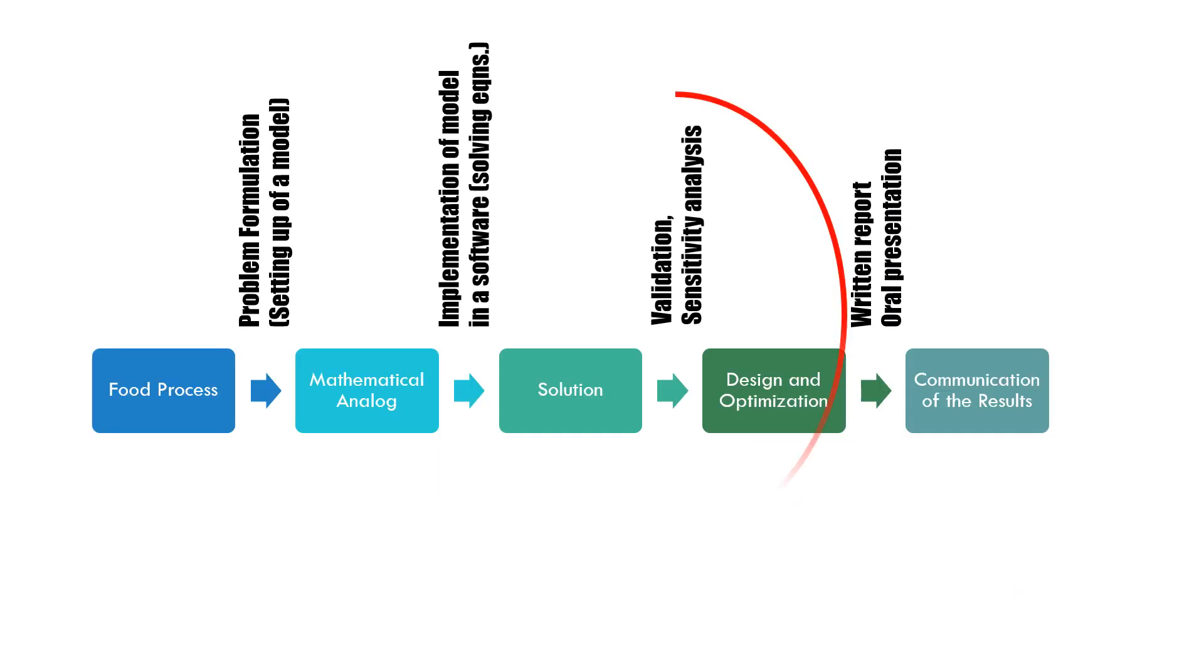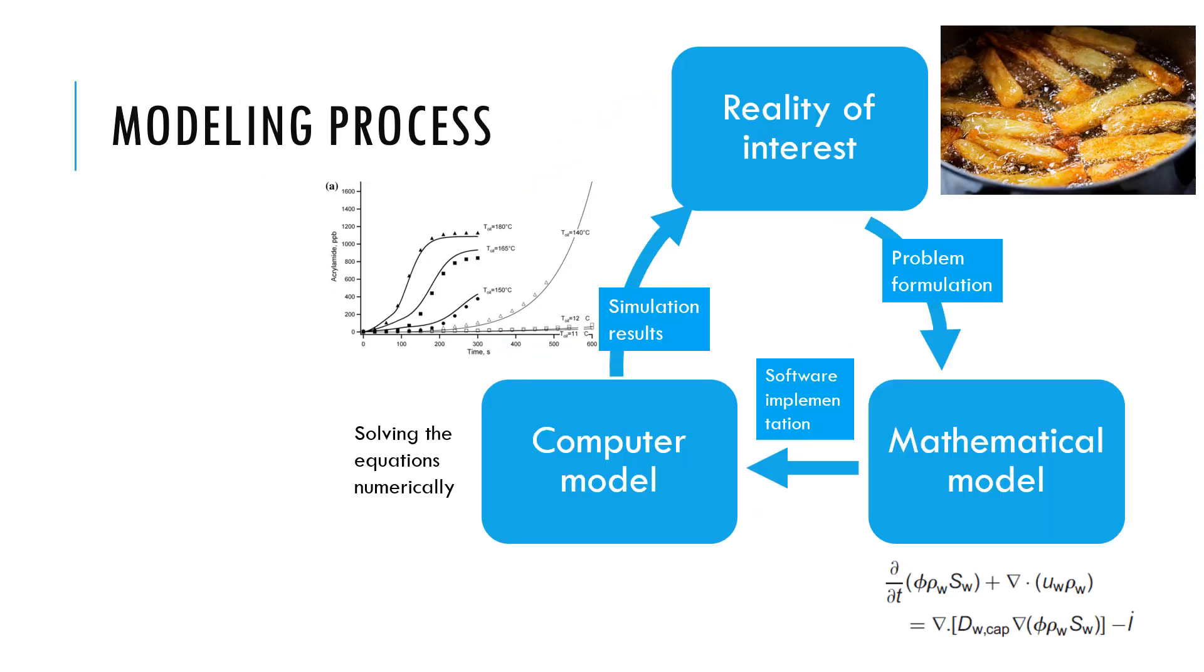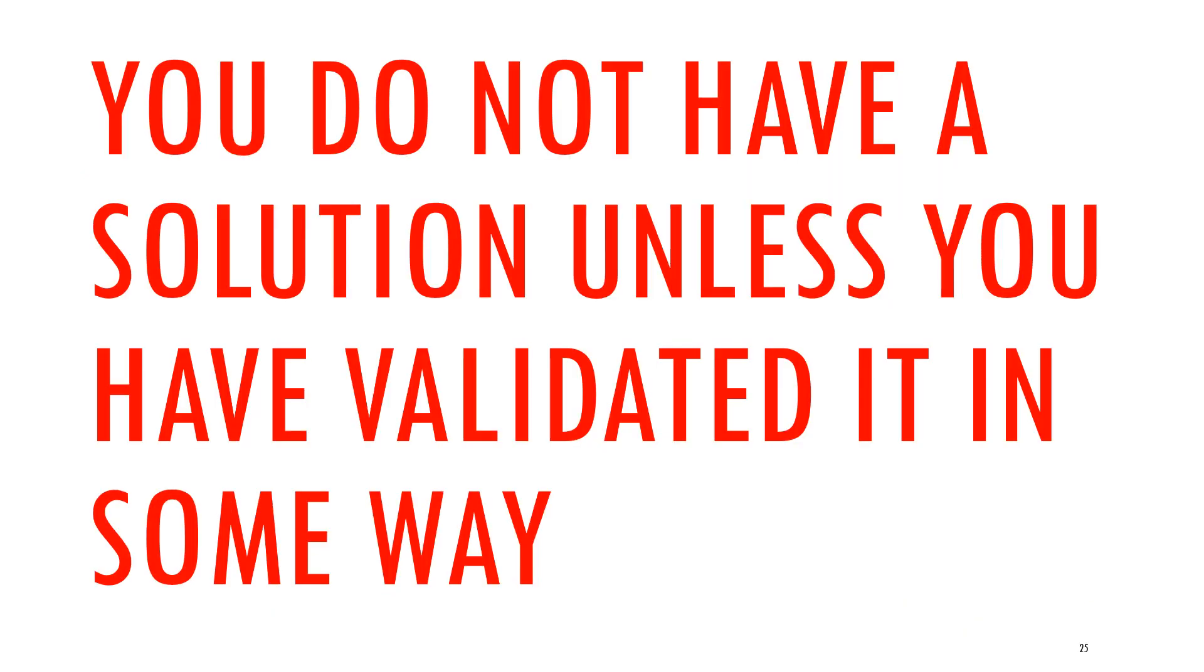Our next critical step is validation. We make errors in problem formulation where we make assumptions, and we make errors in the software implementation or solving those equations. How much error, we do not know. So a critical process is to compare our simulation results with something obtained independently. Typically, this means comparing with experimental data. This step is called validation and it's one of the critical steps in modeling. We cannot accept our solution unless we have validated the solution in some way.